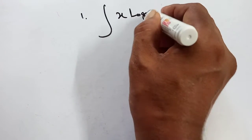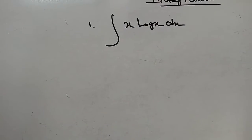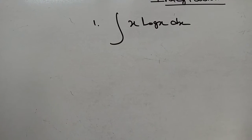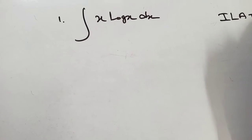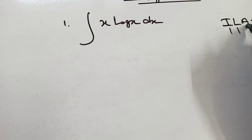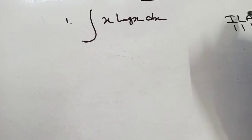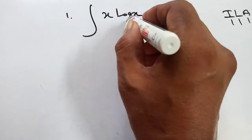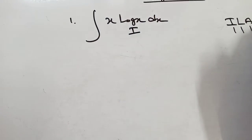Integration of x into log x. At first you see ILATE: I means Inverse, L means Log, A means Algebra, D means trigonometry. That means log is the first function, this is the ILATE rule. And algebra, that means x is the second function.